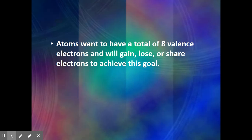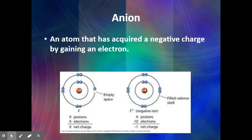Atoms want to have a filled valence shell. For most atoms, they want to get 8 electrons in the outer shell — the octet rule — and will do whatever they can to get those 8 by gaining, losing, or sharing electrons. Hydrogen and helium want 2, but everybody else is going to want 8. Remember that electrons have a negative charge.